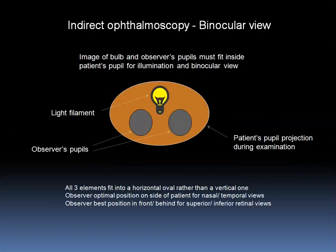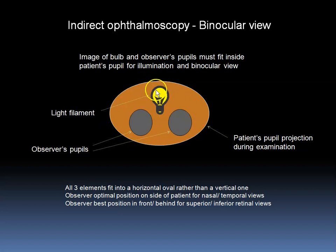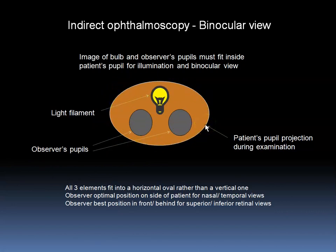In order to be able to observe the retina using this device, the image of the bulb and the observer's pupil must fit inside the patient's pupil for illumination and binocular view. The light filament is positioned above the observer's pupils that are slightly below and to each side. All three elements fit better into a horizontal oval than they would into a vertical one.